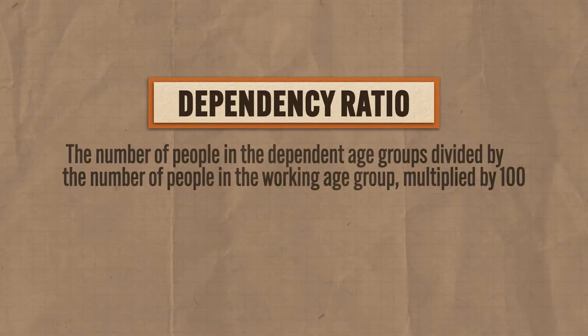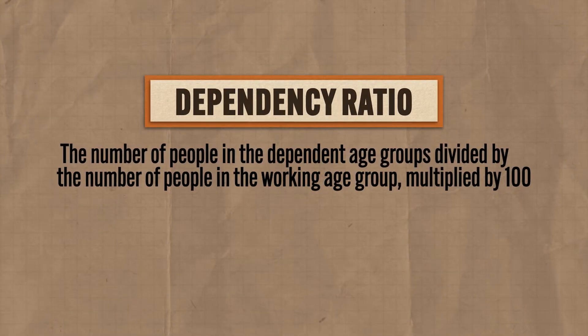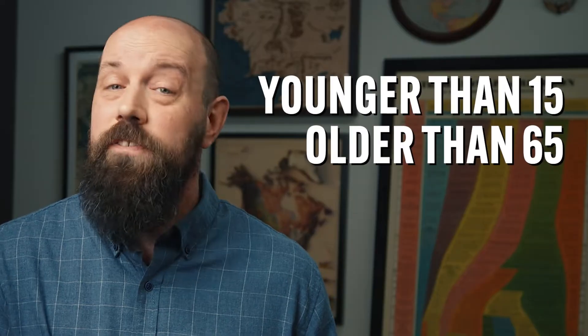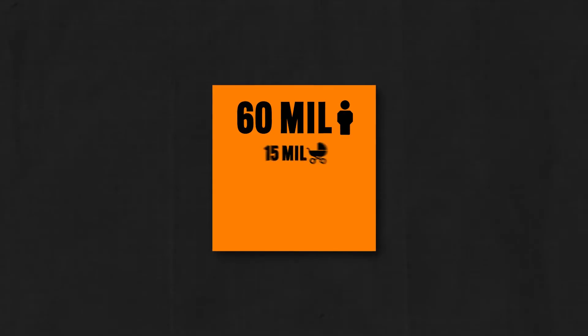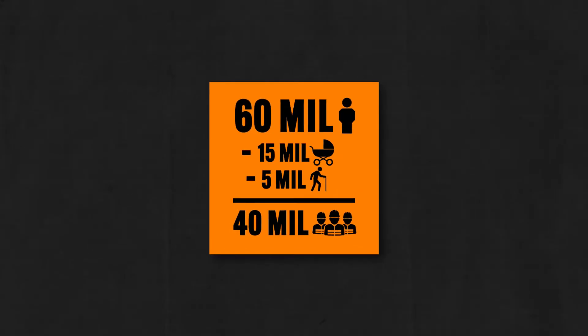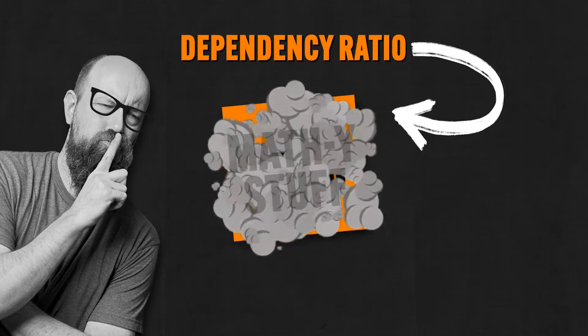Now, related to a population's age structure is their dependency ratio, which is the number of people in the dependent age groups divided by the number of people in the working age groups, multiplied by 100. Dependents are those people who are dependent on others to survive — either too young or too old to work, generally meaning people younger than 15 and older than 65. So suppose a country has a population of 60 million: 15 million younger than 15, 5 million older than 65, leaving 40 million in the working age cohort — giving a dependency ratio of 50%.